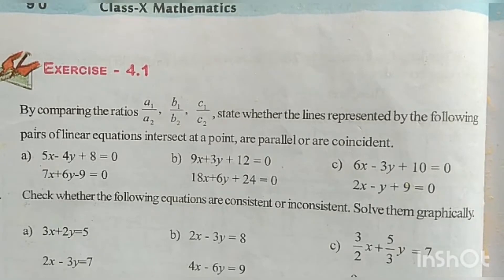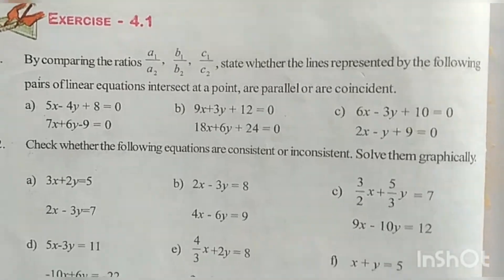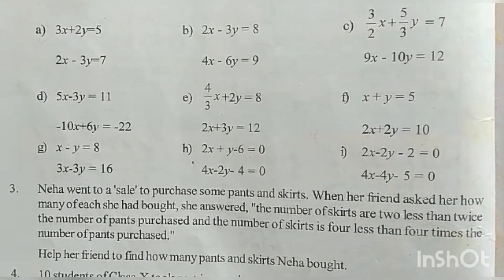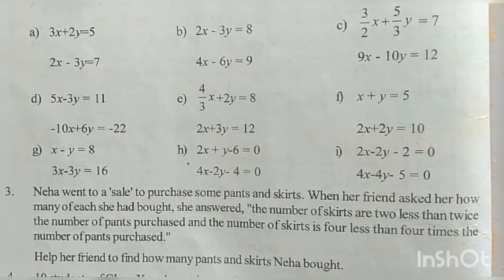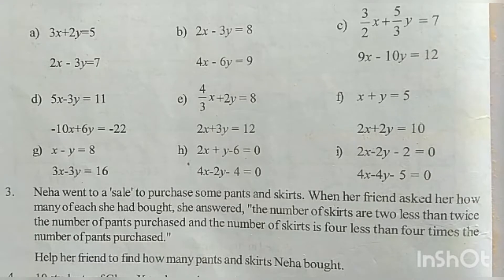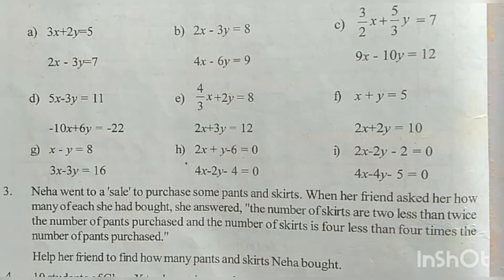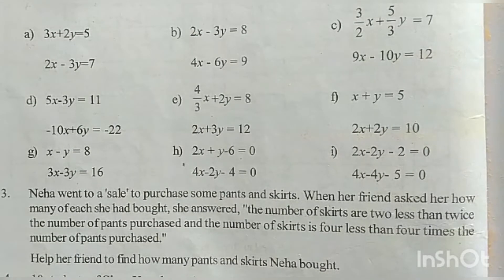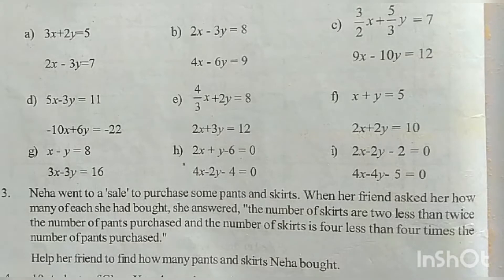Today we are going to discuss about Exercise 4.1, Question No. 3: Neha went to a sale to purchase some pants and skirts. When her friends asked her how many of each she had bought, she answered the number of skirts are 2 less than twice the number of pants purchased. Help her friend to find how many pants and skirts Neha bought.